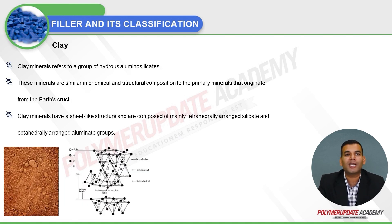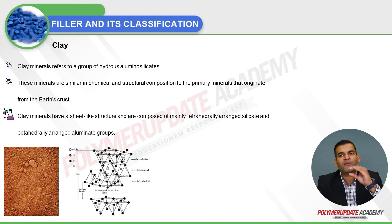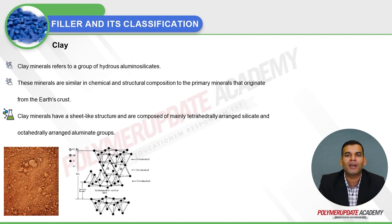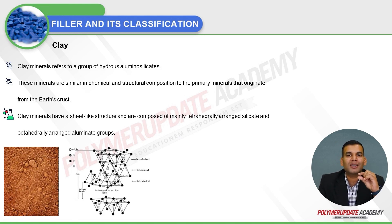Clay refers to a group of hydrous aluminosilicates with a sheet-like structure similar in chemical and structural composition to primary minerals from the earth's crust. Analogous to the pages of a notebook, clay has a stacked structure with tetrahedral silicate layers and octahedral aluminate layers. A single layer has a thickness in the nanometric range of one to ten nanometers.